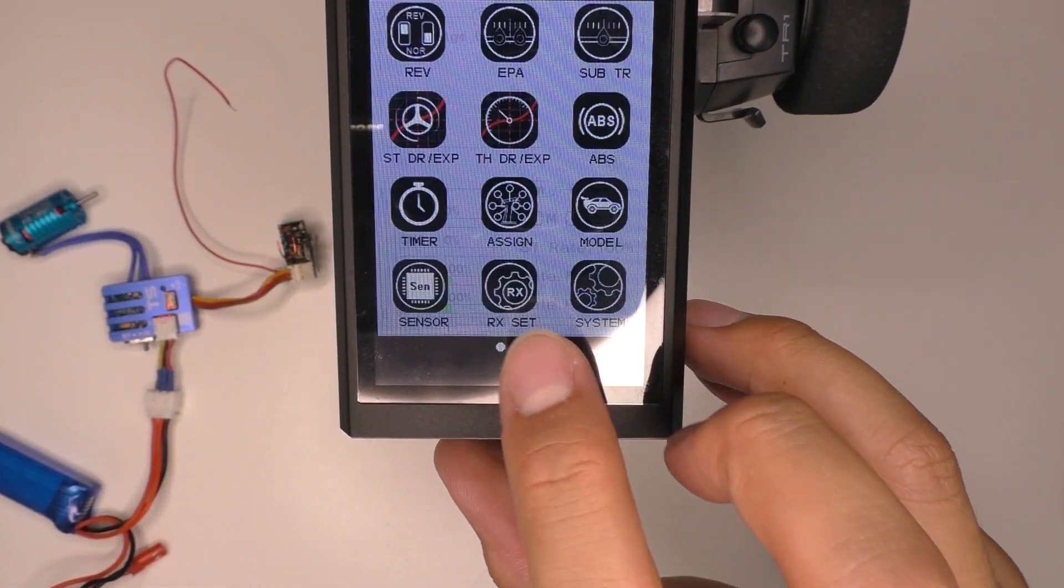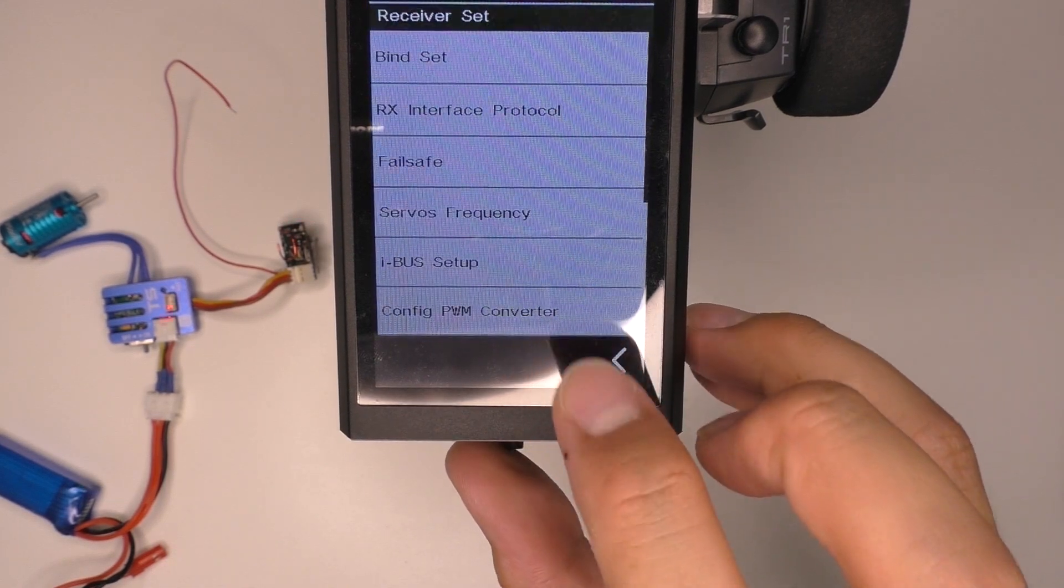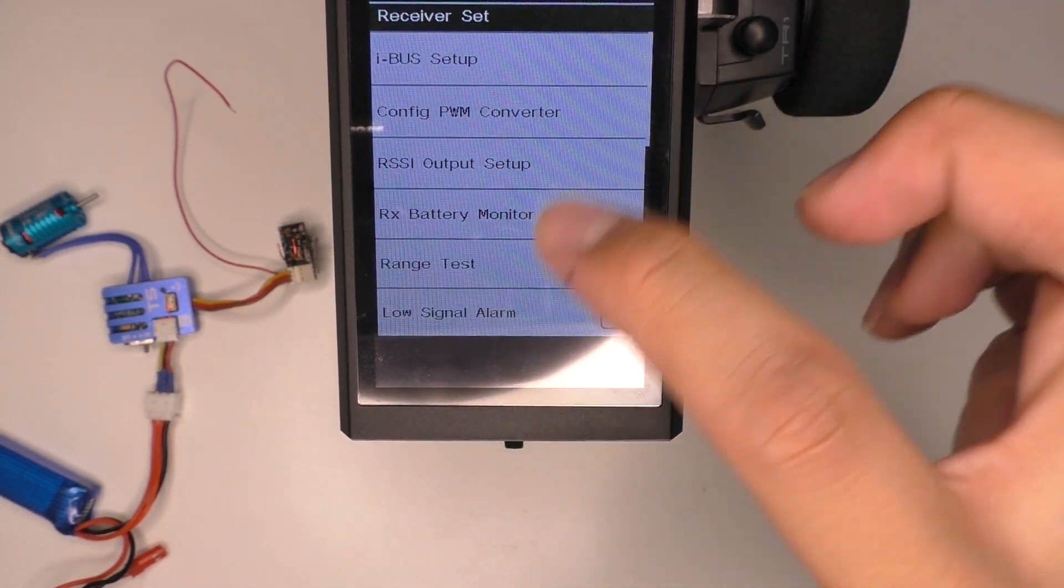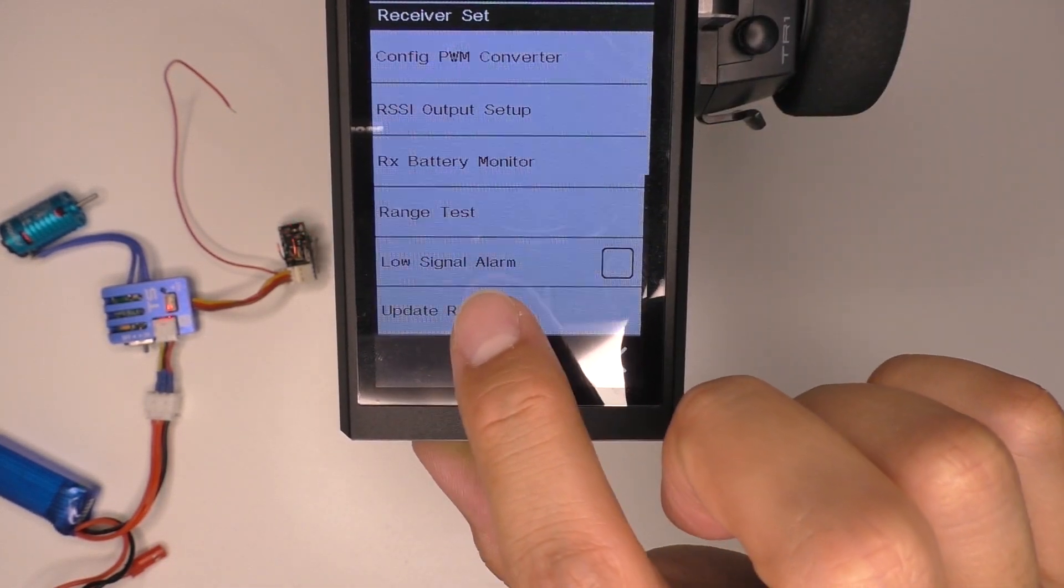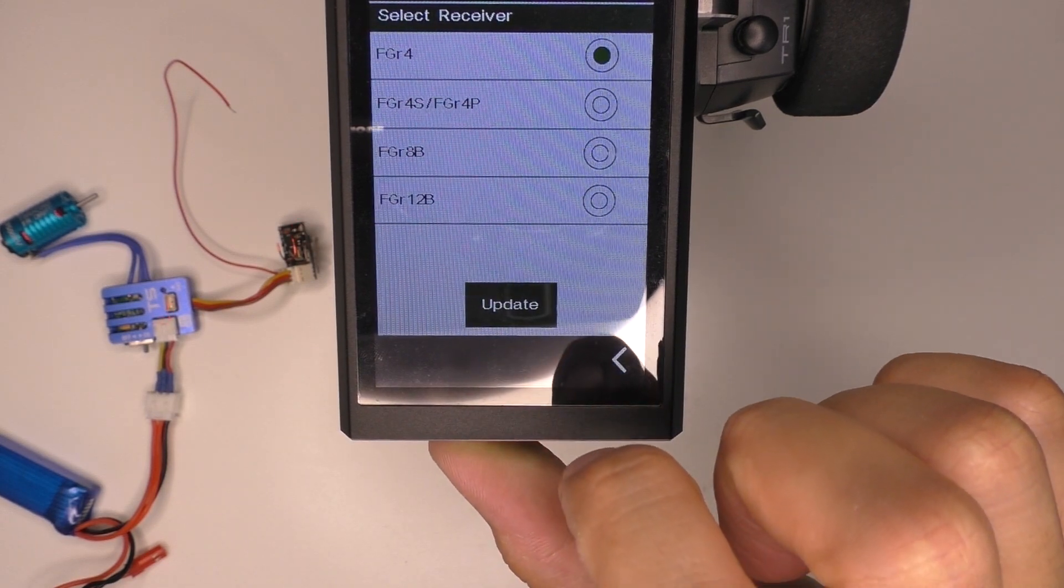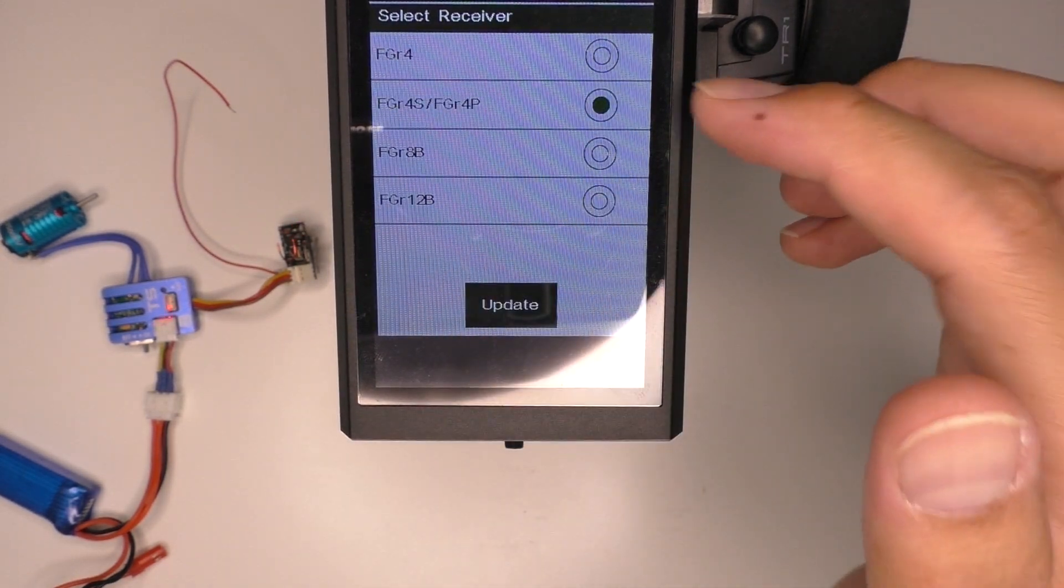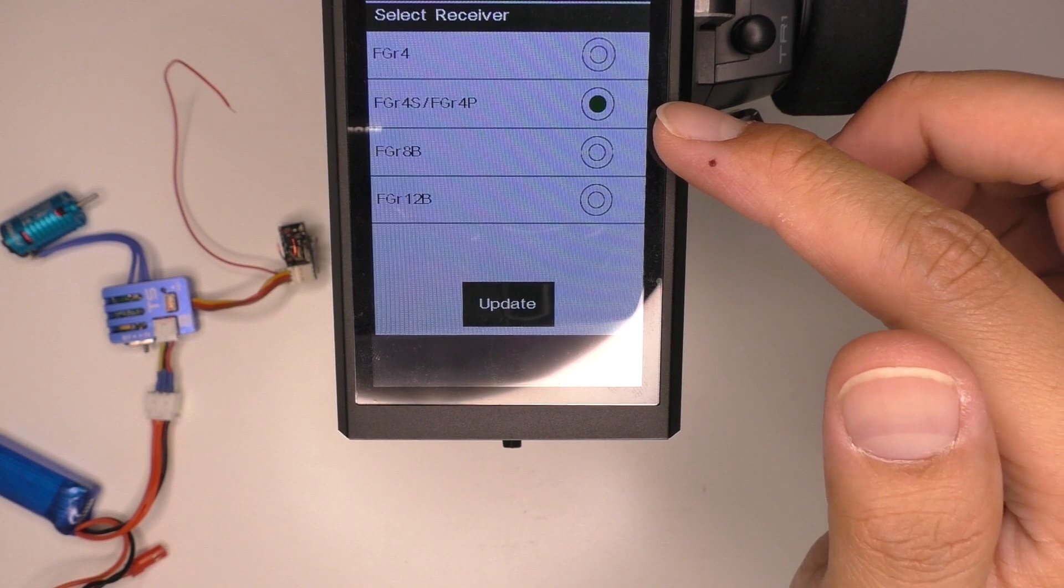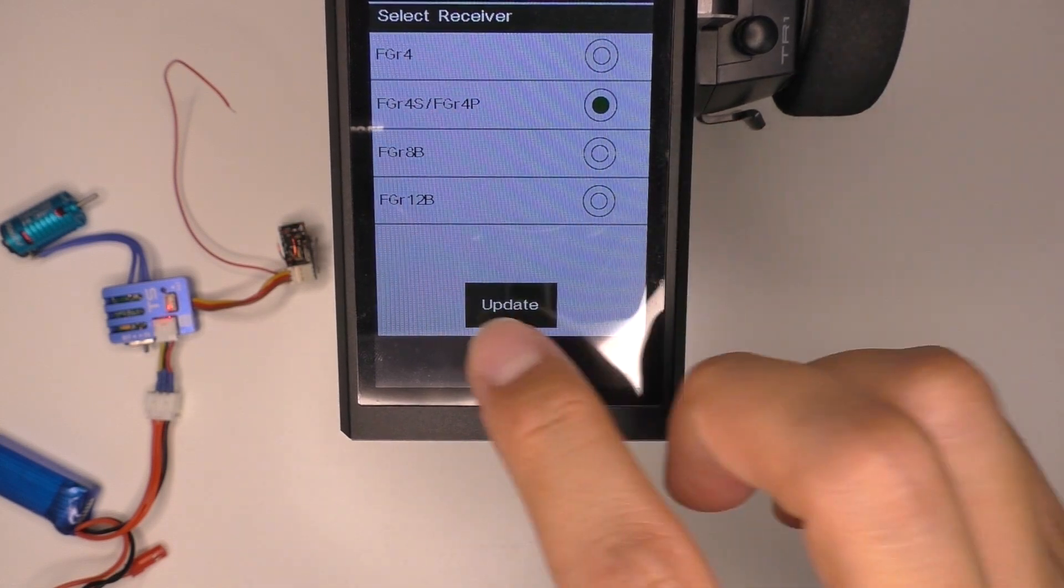Go to the transmitter. RX set. Scroll down to update receiver. Choose the FGR4S FGR4P. Then click update.